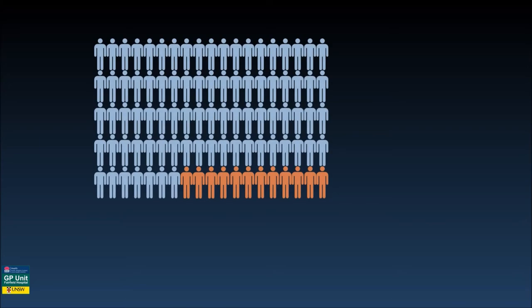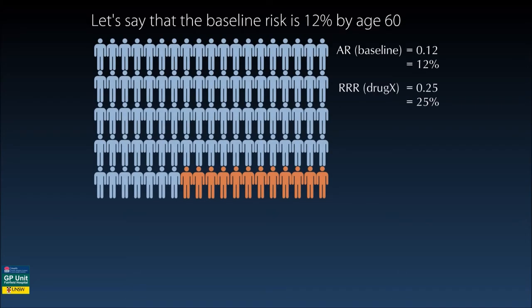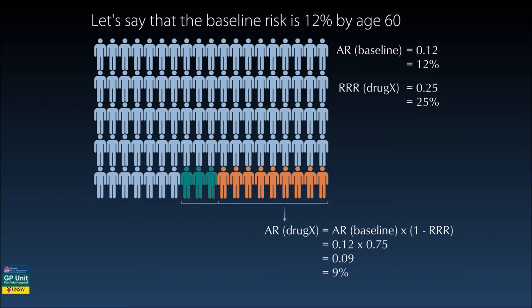This is a worked scenario using a diagram of 100 people. Let's say that the natural history of condition Y is that 12 out of 100 people will be diagnosed with it by age 60, represented by people coloured orange — so the baseline absolute risk is 12%. Now imagine that drug X reduces the relative risk of developing condition Y by 25%. If everyone took drug X, a quarter of the people who were going to develop condition Y now do not, represented by three people in dark green. The absolute risk of developing the condition if you took drug X is 9%, and the absolute risk reduction is 3%.